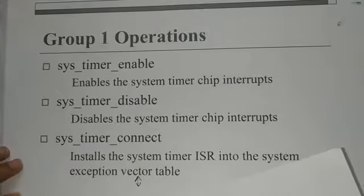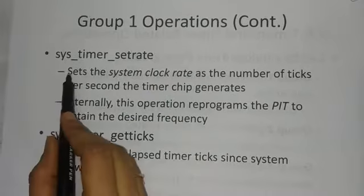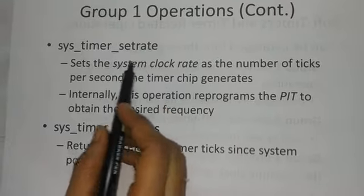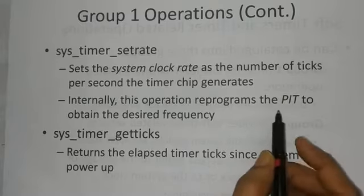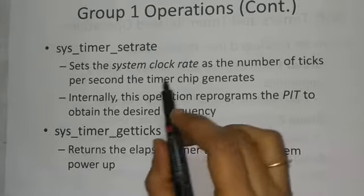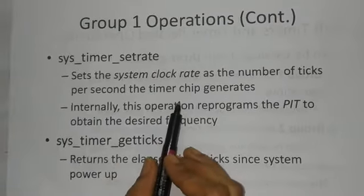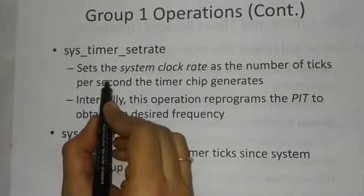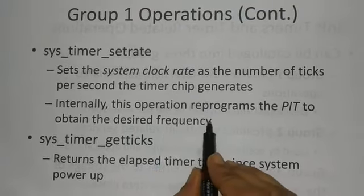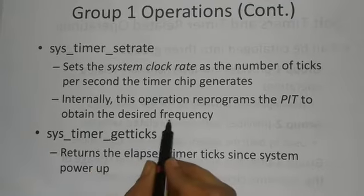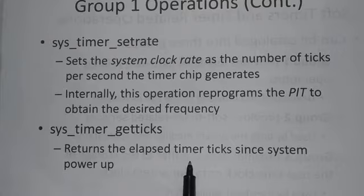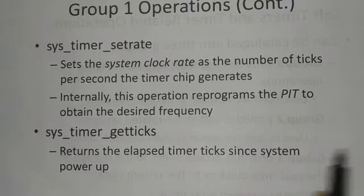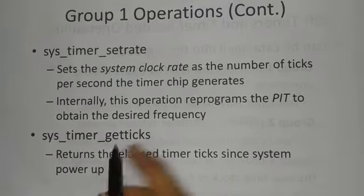Group 1 also includes system timer set rate, which sets the system clock rate as the number of ticks per second the timer chip generates. This operation internally reprograms the programmable interval timer (PIT) to obtain the desired frequency. Another function is system timer get ticks, which returns the elapsed timer ticks since system power-up — activated whenever the system power is either off or on.